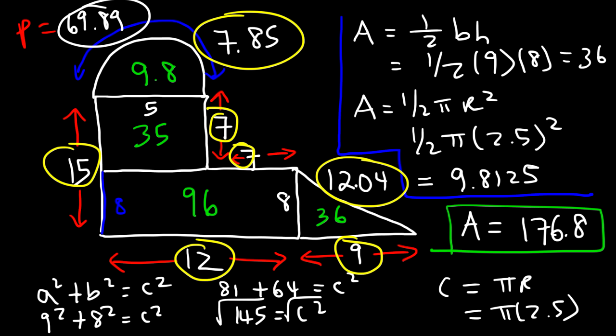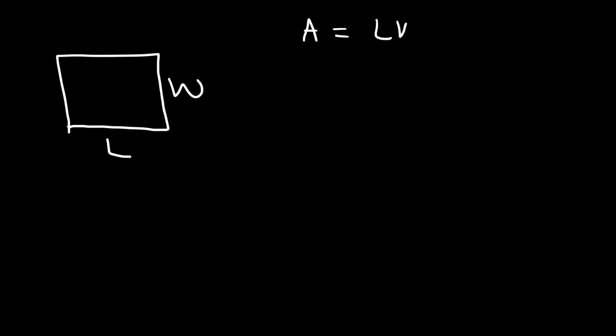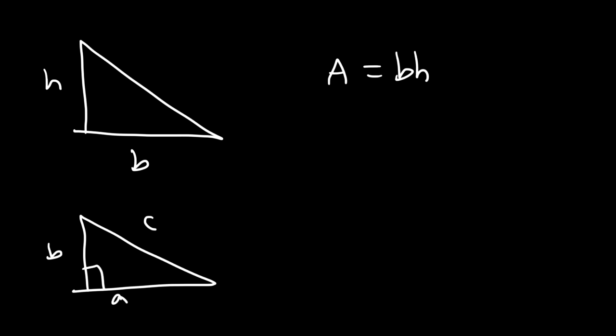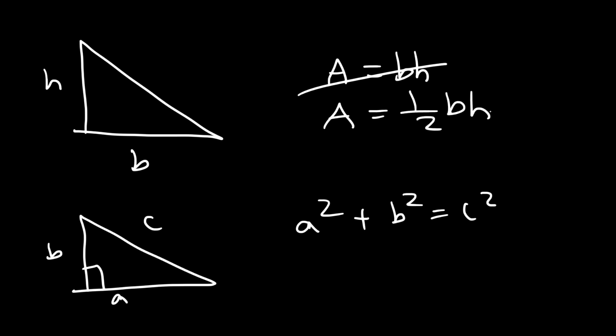So now you know how to find the area and the perimeter of irregular figures. Just to review, here are some formulas you need to know. For a rectangle, the area is length times width. The perimeter is 2L plus 2W. For a triangle, the area is 1/2 base times height. And if you have a right triangle and need to find a missing side, you can use the Pythagorean theorem.